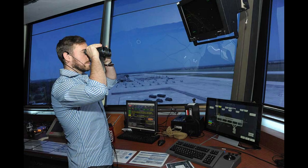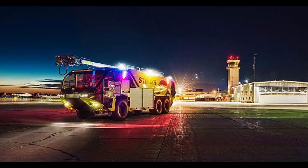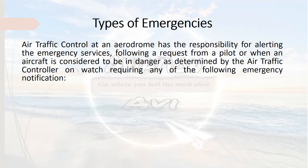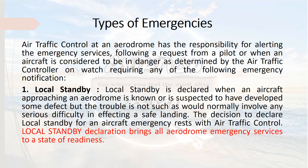Now let us understand the types of emergency and the level of readiness. The air traffic control at an aerodrome has the responsibility for alerting emergency services following a request from the pilot or when an aircraft is considered to be in danger. The first type is local standby, declared when an aircraft approaching an aerodrome is known or suspected to have developed some defect but the trouble is not such as would normally involve serious difficulty in affecting a safe landing.